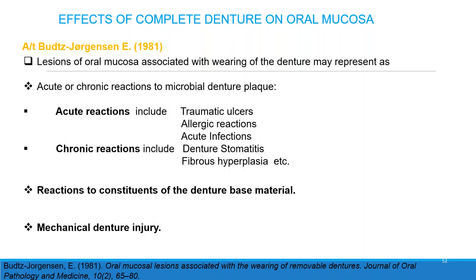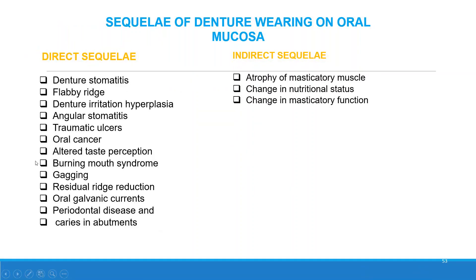The lesions of oral mucosa associated with denture wearing may represent acute or chronic reactions. Acute reactions include traumatic ulcer, allergic reactions, and acute infections. Chronic reactions include denture stomatitis and fibrous dysplasia. Reactions to constituents of denture base material or mechanical injury may also occur. Direct sequelae of denture wearing include denture stomatitis, flabby ridge, denture irritation hyperplasia, angular stomatitis, traumatic ulcers, oral cancer, altered taste perception, burning mouth syndrome, gagging, residual ridge resorption, oral galvanic current, periodontal diseases, and caries in abutments. Indirect sequelae include atrophy of the maxilla, change in nutritional status, or change in masticatory function.